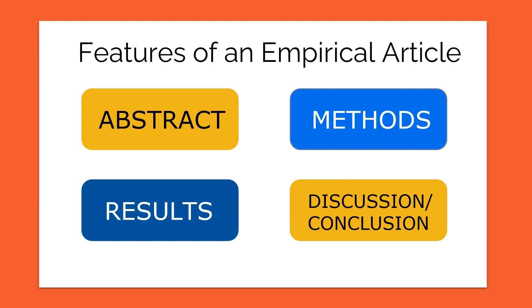If not, or if you're not quite sure, you can also look in the body text of the article, where you should be able to find methods and results sections — those terms shown here in blue on the screen. Since these are important sections of an empirical research article, you should see headings titled with this terminology. An empirical research article will also include a discussion section, a conclusion section, or both. These sections will further discuss the results and the implications, and are important sections that can help you understand more about the study that was conducted.